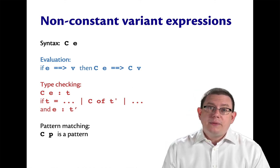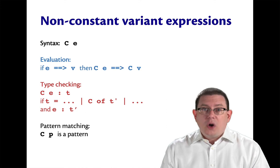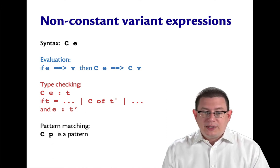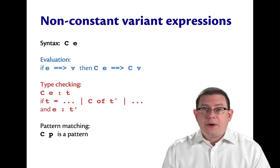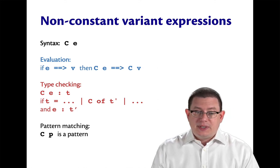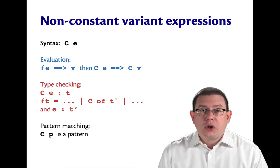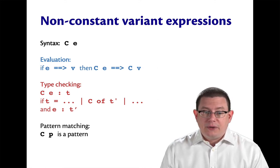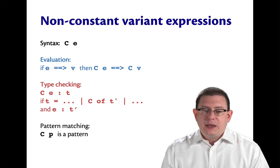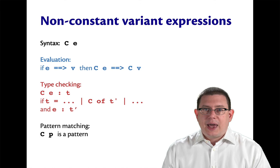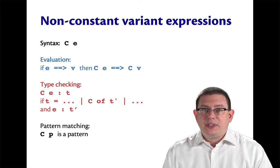For type checking, a non-constant variant expression has type T if there's a definition of that variant type T that includes that constructor name C. And that constructor is declared to carry along with it data of type T prime. And the expression E that is written next to capital C has that type T prime.